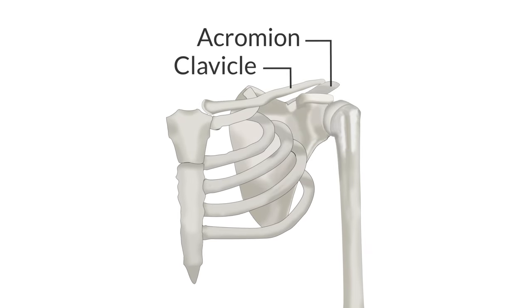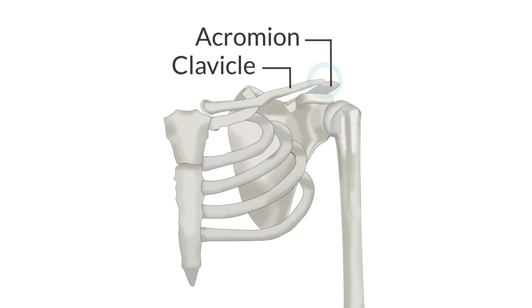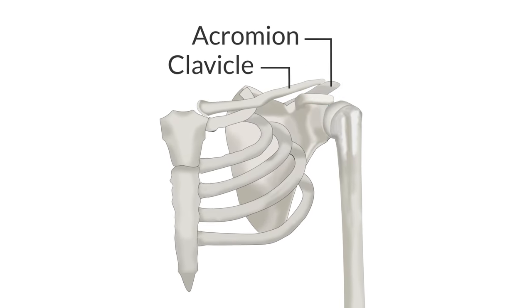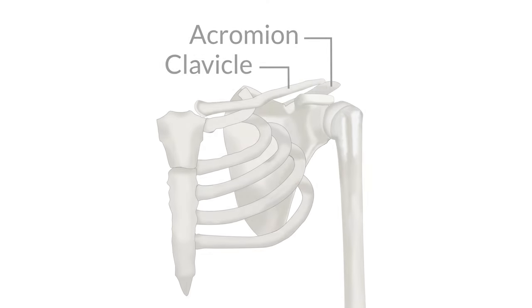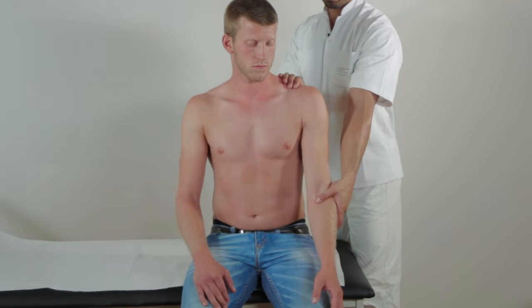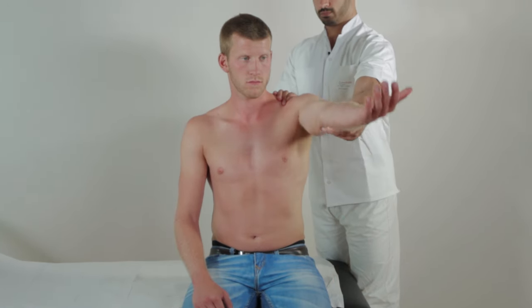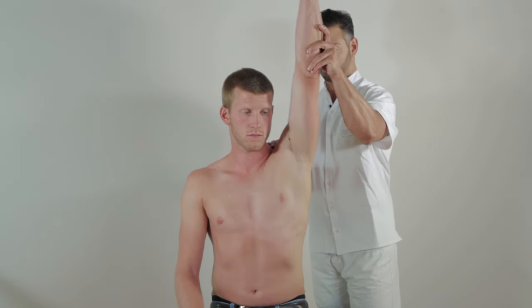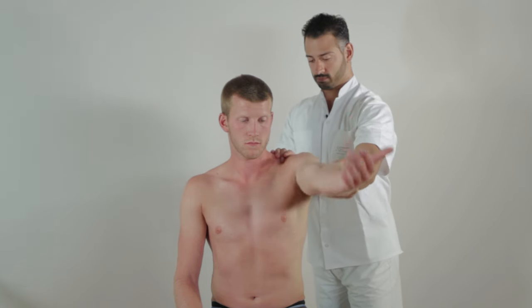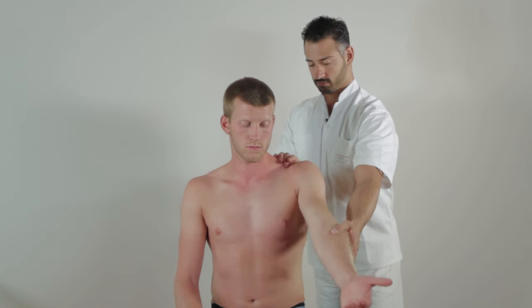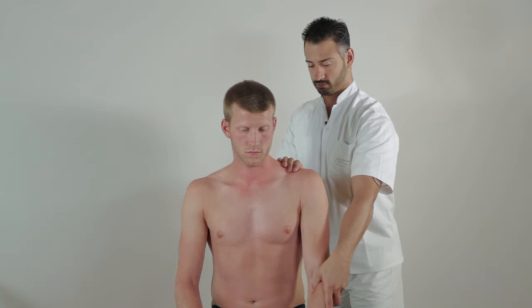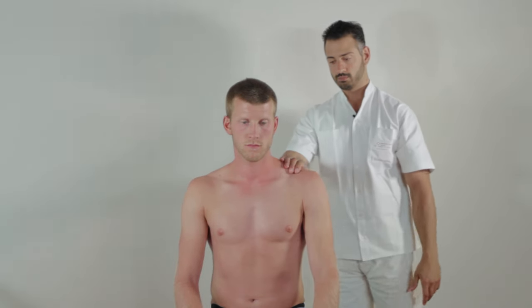Aside from subacromial impingement, problems in the acromioclavicular or AC joint can also cause tenderness on flexion. To differentiate between subacromial and acromioclavicular origin, simply repeat the movement with the arm in external rotation, which opens up the subacromial space and should thus decrease pain if subacromial impingement is present. In contrast, pain due to AC joint pathology would be unaffected.